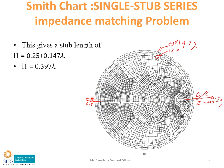This is the first possible design of the stub. Now we will see how to design the second possible position. For this, consider the second intersecting point Z2 of the VSWR circle and the R equals 1 circle, and perform the same process as for Z1.